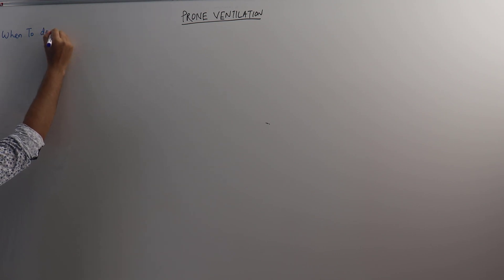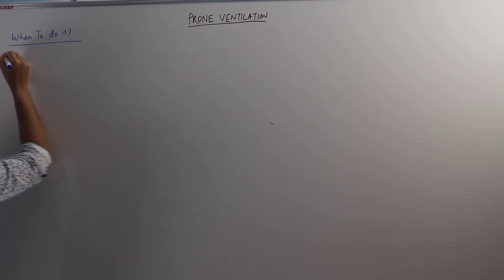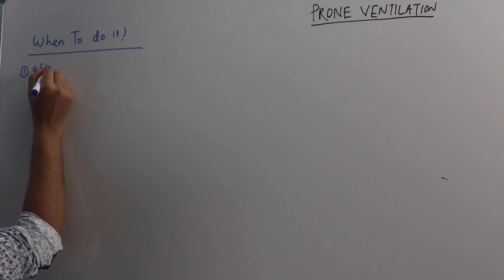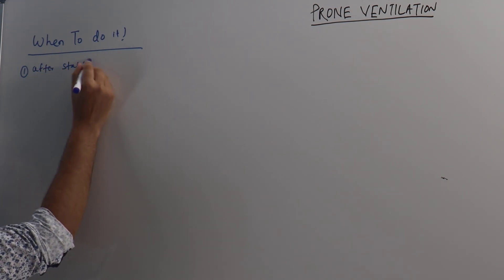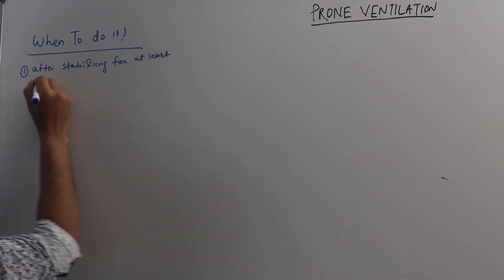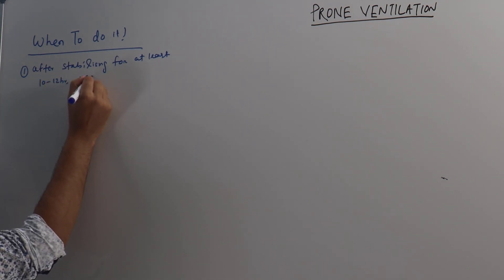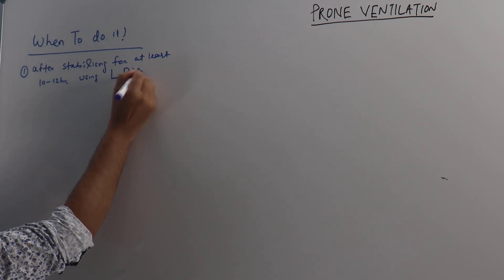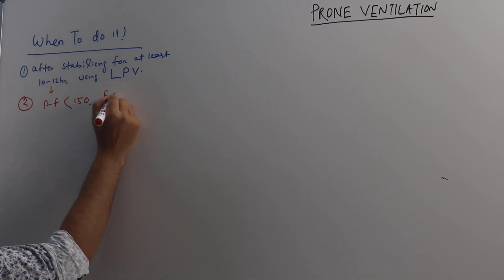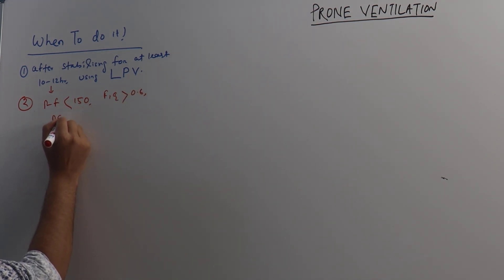Number one point: not immediately after stabilizing. Wait for at least 10 to 12 hours using lung protective ventilation. After that, if the patient is still having PF ratio less than 150, FiO2 more than 0.6, PEEP more than 10, then consider for proning.